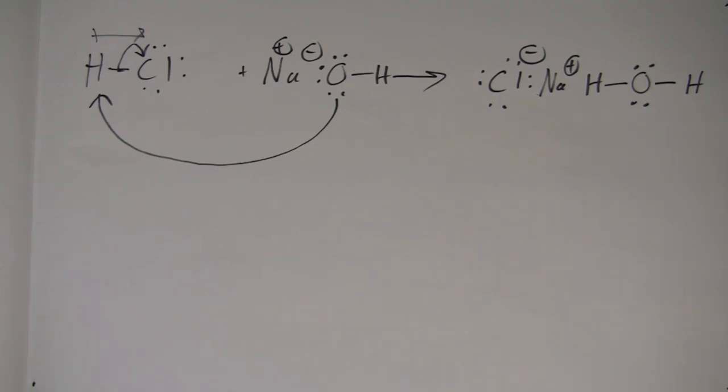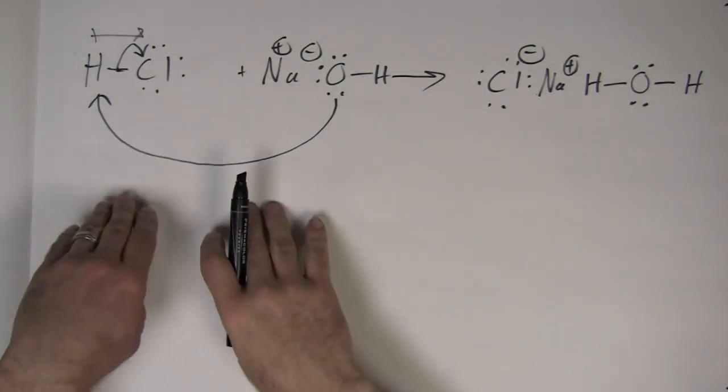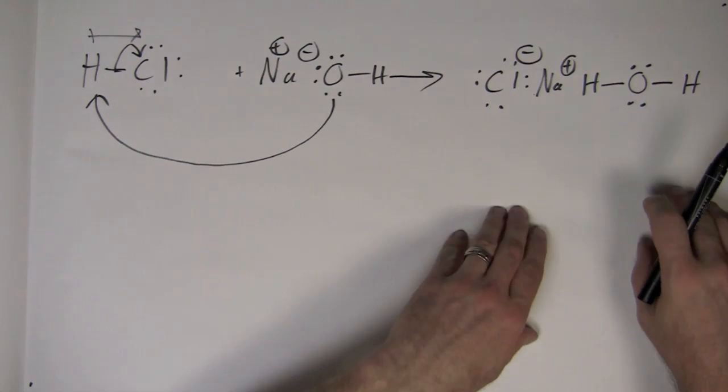Remember, the rules for Lewis structures always apply. Keep in mind the octet rule and formal charges. All the electrons on the left side of the equation must also be on the right side of the equation.